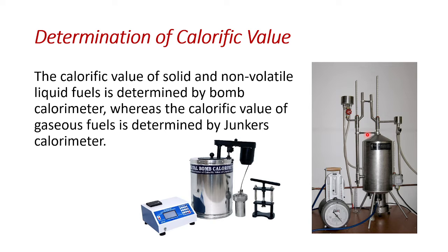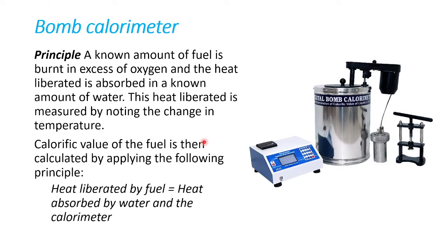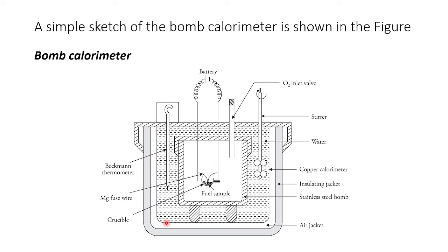In principle for the bomb calorimeter, a known amount of fuel is burned in excess of oxygen and the heat liberated is absorbed in a known amount of water. This heat liberated is measured by noting the change in temperature. The calorific value of the fuel is then calculated by applying the principle that heat liberated by fuel equals the heat absorbed by water and the calorimeter. A simple sketch of a bomb calorimeter is shown in the figure.